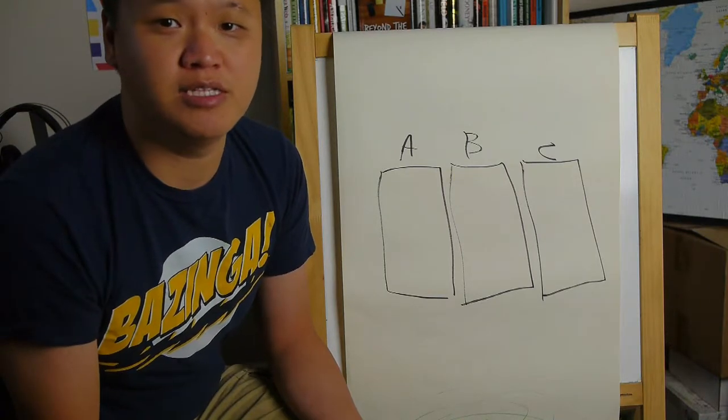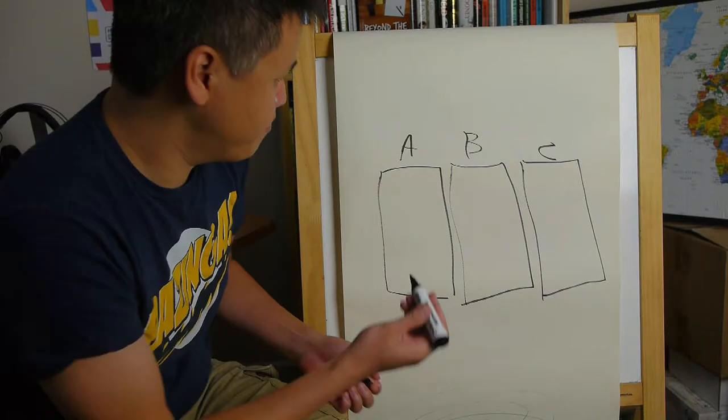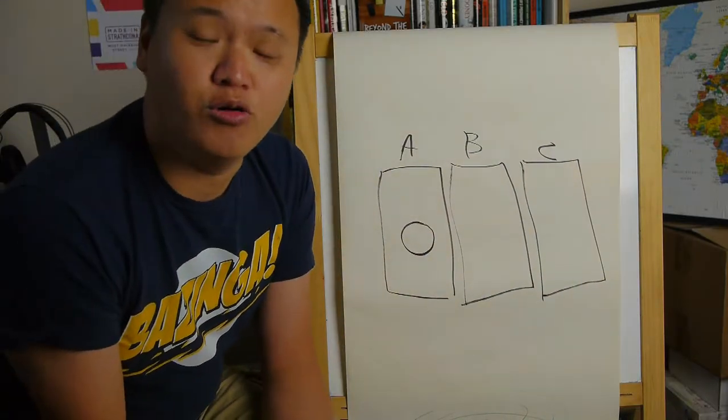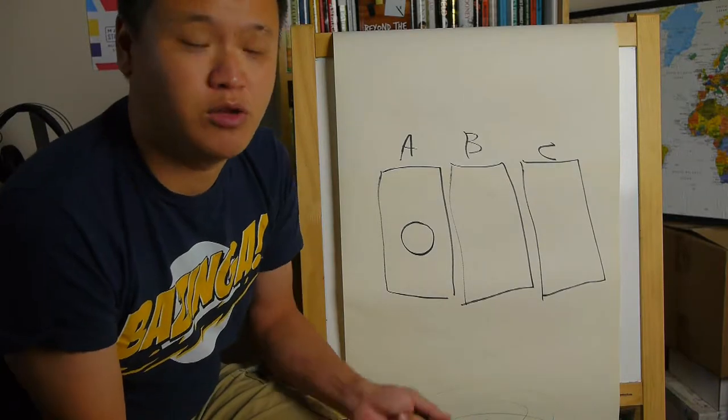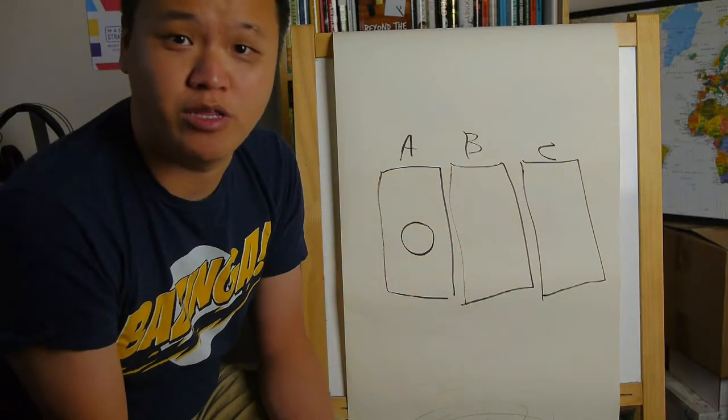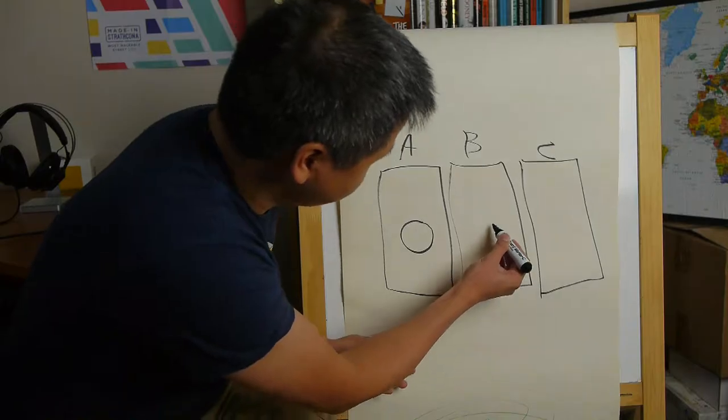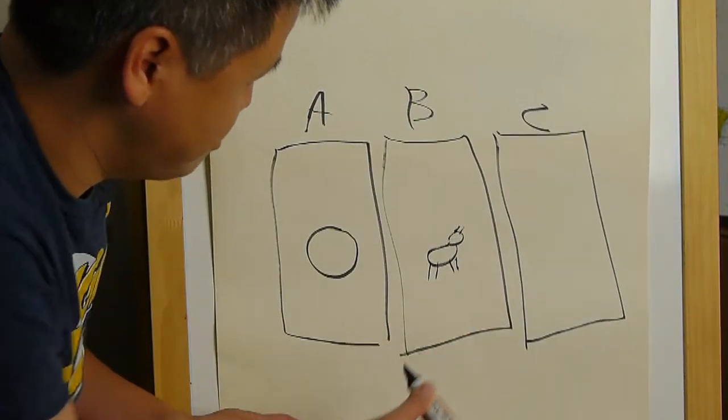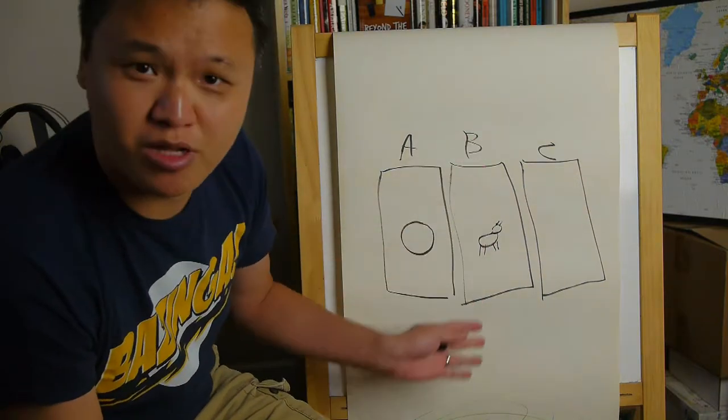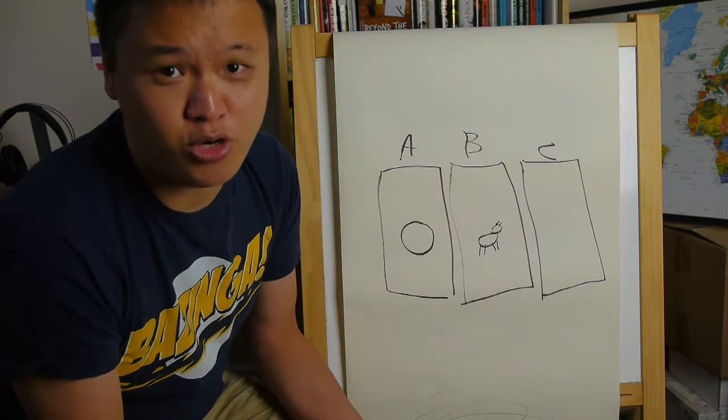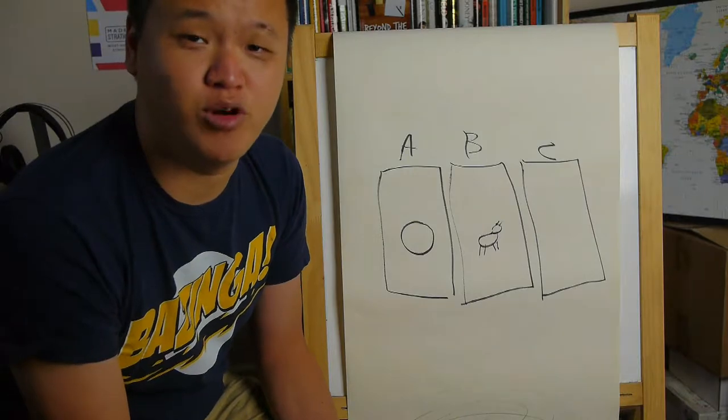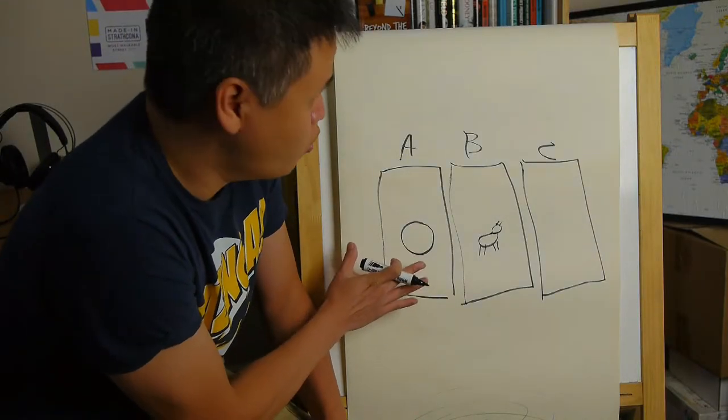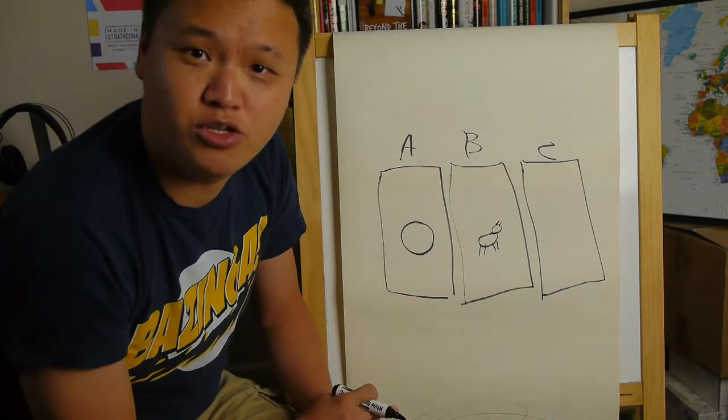So let's say, for example, that you pick door A. So this is the door that I'm picking. The host, Monty Hall, then reveals one of the other two doors to show that there's a goat behind it. So that's a horrible looking goat. But the idea is that he showed that behind door B is a goat. Now the question posed to you is should you stick with your original choice of door A or should you switch to door C?